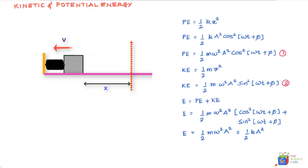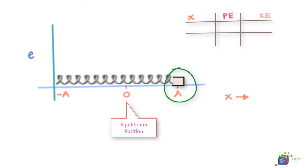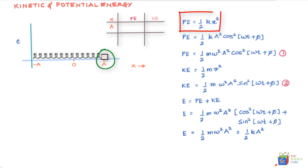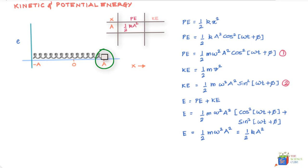I'll explain what a displacement-energy graph is. When the mass is at +a, where it starts its journey, the spring is stretched to its maximum, so the potential energy is also maximum: PE = ½ka². You can substitute x = a into the equation, or set t = 0 — you get the same answer, ½ka². At the extreme right, the mass is stationary, so kinetic energy is zero.